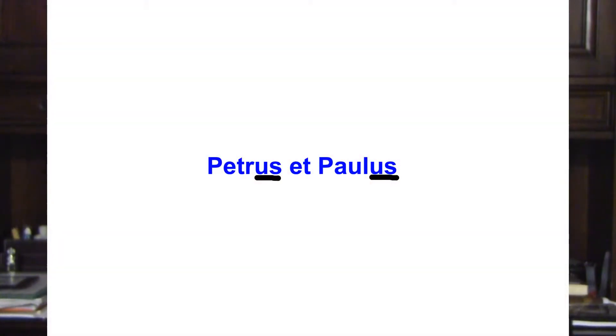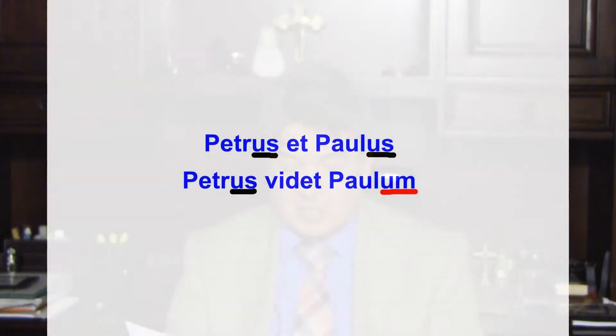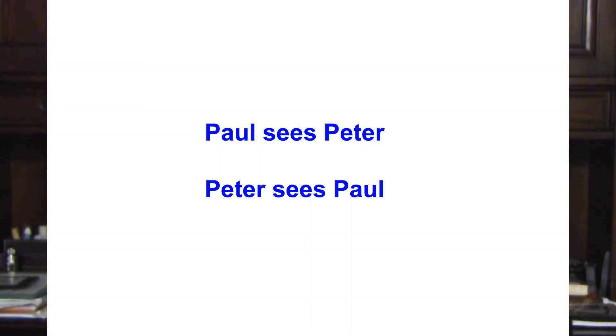Let's take as an example a very basic statement such as 'Peter sees Paul.' Peter and Paul in Latin would be 'Petrus et Paulus,' nominativus. If we invert the sentence and say 'Paul sees Peter' in English, then we change the meaning. Now the subject Paul sees the object Peter. So 'Peter sees Paul' is different from 'Paul sees Peter.' But let's look at the Latin.